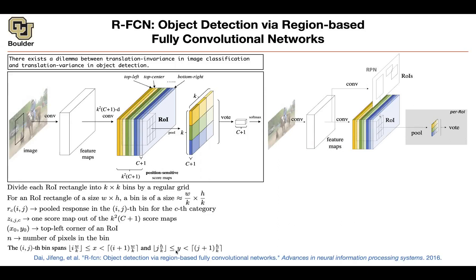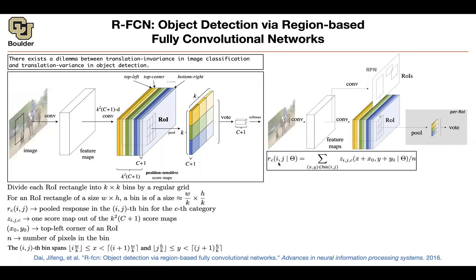That gives you the X and Y coordinates. Each one has a step size of W/K for X and H/K for Y, and all those X and Y values are within that bin. The response at the (i,j) bin for class C is the summation of all pixels within that bin, coming from your position-sensitive score maps. That's why x₀ and y₀ matter — they give you the top-left corner to start from. Then you divide by N because it's average pooling. That's how you get your responses.